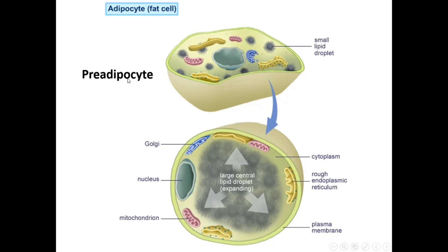After differentiation, the white adipose cell starts to store lipids inside multiple droplets — we call this stage the pre-adipocyte. Then this cell accumulates all of the droplets into one big droplet. This big droplet displaces and flattens the nucleus against the cell membrane, and all parts of the cytoplasm become occupied by the large droplet. At this stage we call it the mature adipocyte.